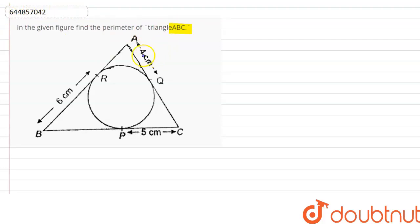So in this question, we have AQ equals 4 centimeter, BR equals 6 centimeter and PC equals 5 centimeter. And now we have to use one property and that is tangent from same external point